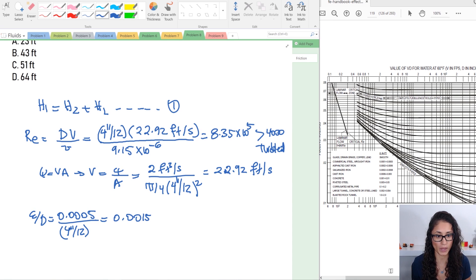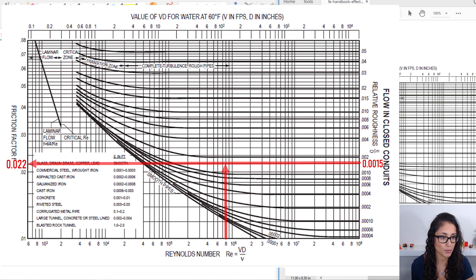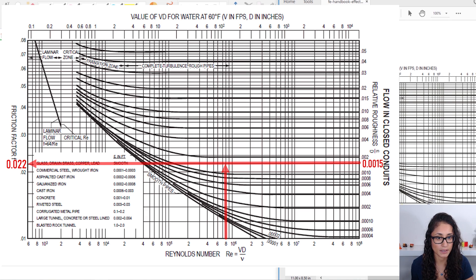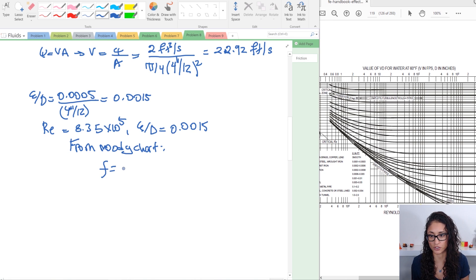Now if you go to the Moody chart, we have 8.35 times 10 to the power of 5, so it's going to be somewhere here. Note that this is 8 times 10 to the power of 5, not this one - this is 8 times 10 to the power of 4. A lot of people get confused with this chart. So this is 8 times 10 to the power of 5. We have 0.0015, so that's somewhere here between this number and this number. If we follow that and hit 8, we're going to get something like 0.022. So we found that F, the friction factor, is 0.022.